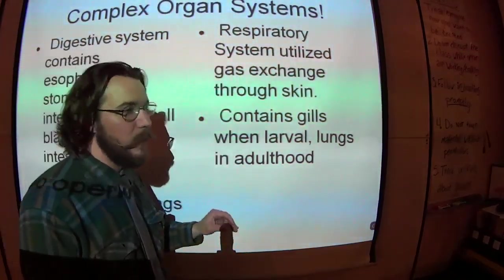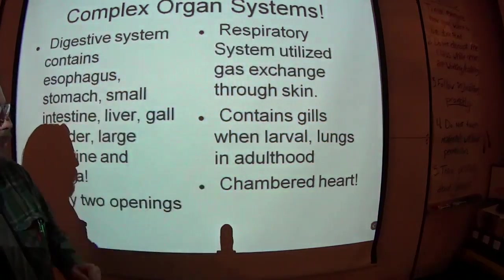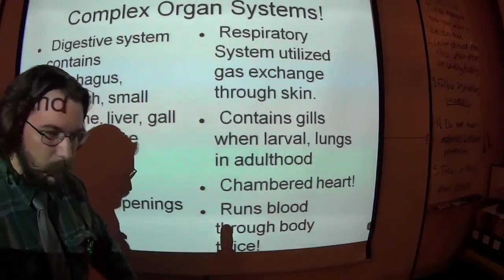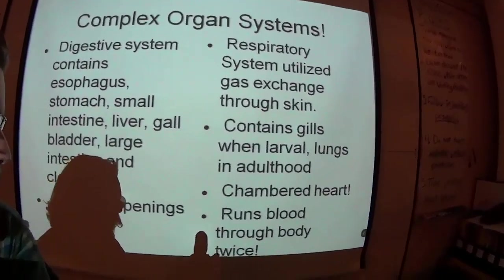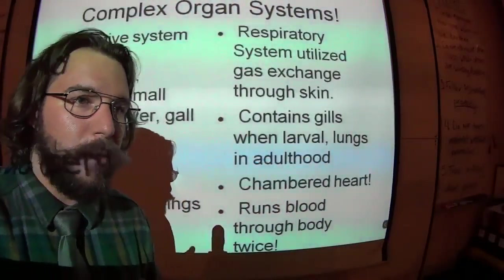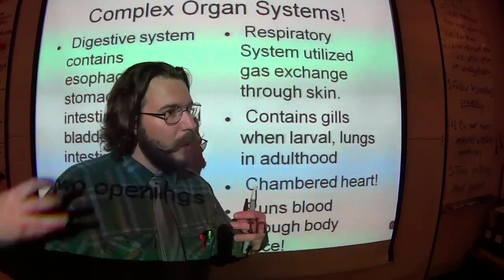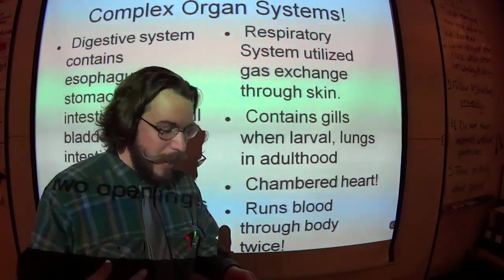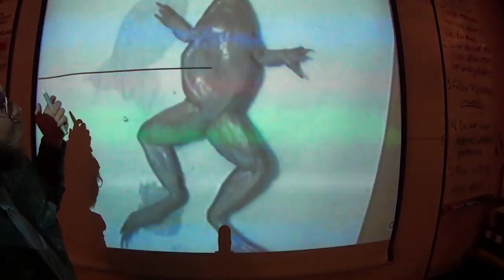And it really helps them because their heart is not as efficient as ours and you'll see that in the dissection. They've got a chambered heart. It's only got three chambers and it runs blood through the body twice. Runs blood through the body twice. Why does that seem to matter? Well because what that means is unlike us where we run the blood through and then it's deoxygenated, they're mixing all the oxygenated and deoxygenated blood together. So they need to rely on that additional gas exchange through the skin otherwise they wouldn't get enough oxygen.